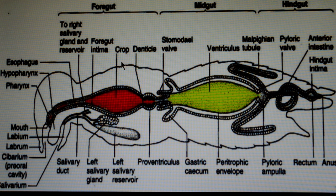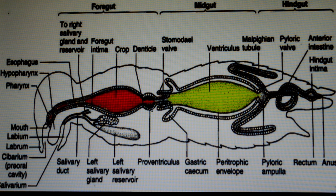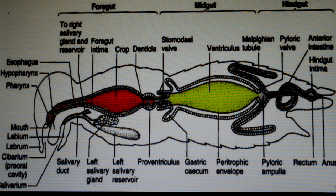The crop acts as temporary storage of food. In some insects, the crop is modified into a lateral diverticulum, especially in Lepidoptera and Diptera. Next is the proventriculus, also called gizzard or denticles. The proventriculus helps in mastication of food particles in solid-feeding insects.